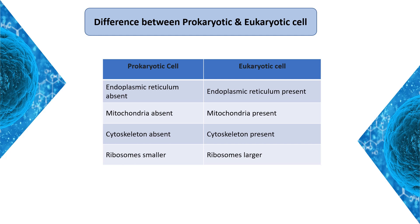An important structure to know about is the endoplasmic reticulum. In eukaryotic cells, the endoplasmic reticulum exists as rough ER (RER) and smooth ER (SER). RER has ribosomes attached to it, while smooth ER has no ribosomes. The endoplasmic reticulum plays important roles in the synthesis of lipids, glycogen, and proteins, and provides a wide area for cellular reactions and intracellular support.